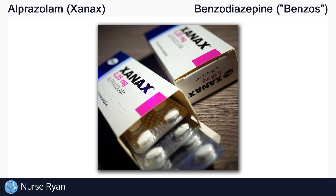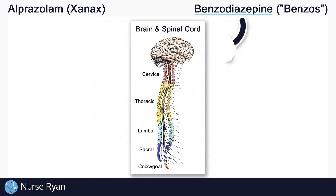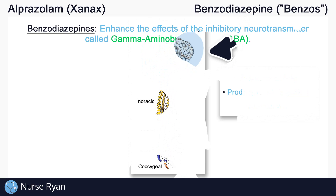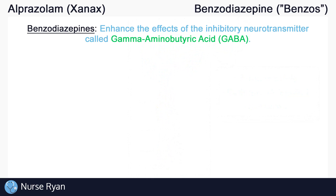Alprazolam belongs to the benzodiazepine drug classification, sometimes just called benzos for short. Benzodiazepines work in the central nervous system, which includes the nerves of the brain and spinal cord, to decrease anxiety and produce a calming effect. The way that this is accomplished is by enhancing the effects of the inhibitory neurotransmitter called gamma-aminobutyric acid, more commonly known as GABA.